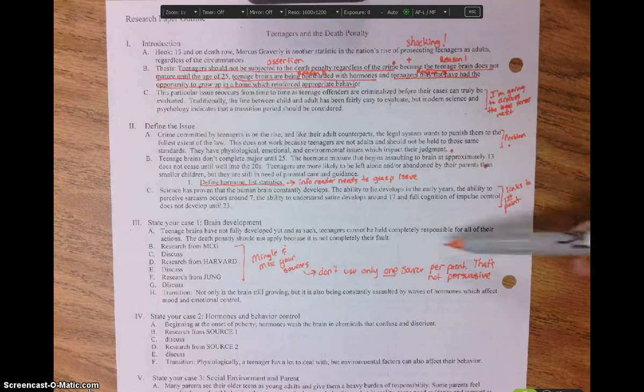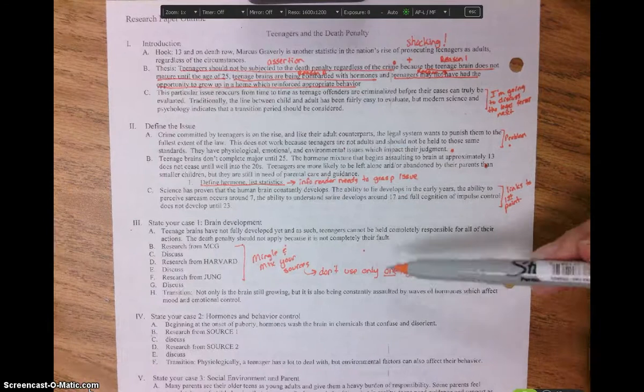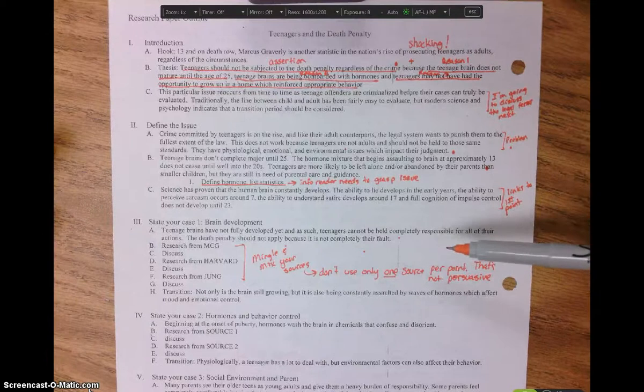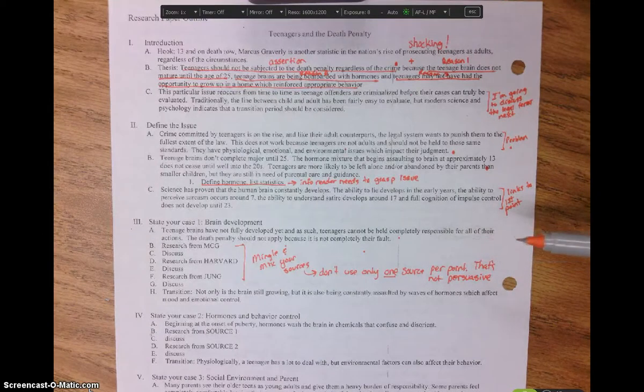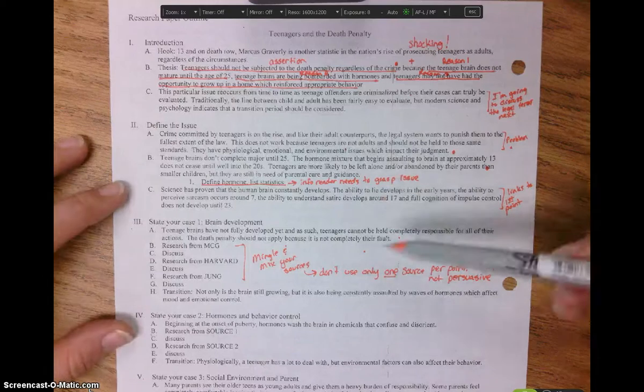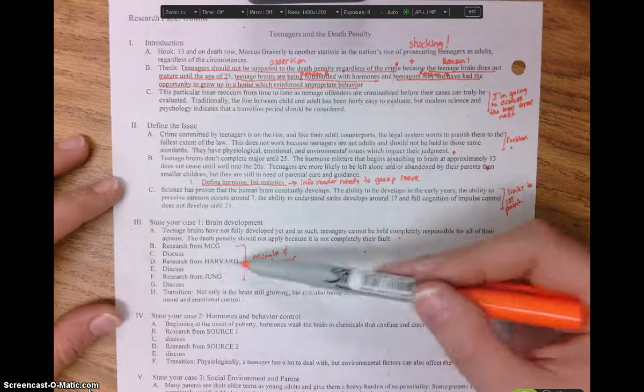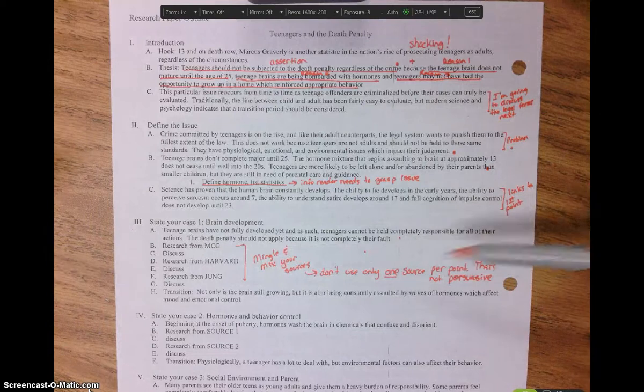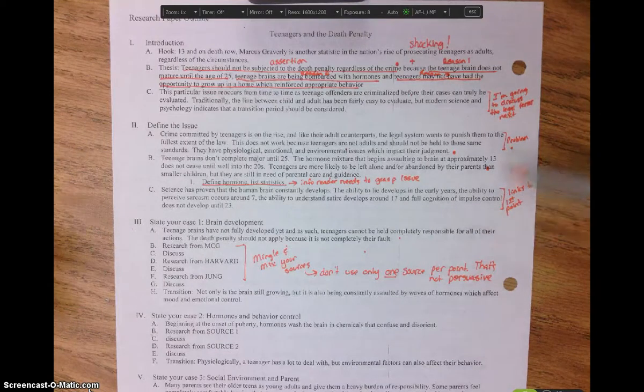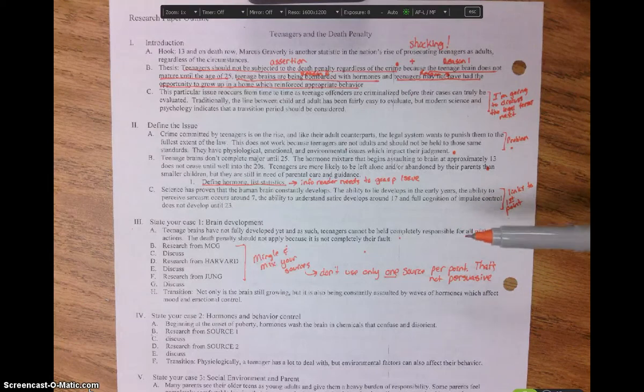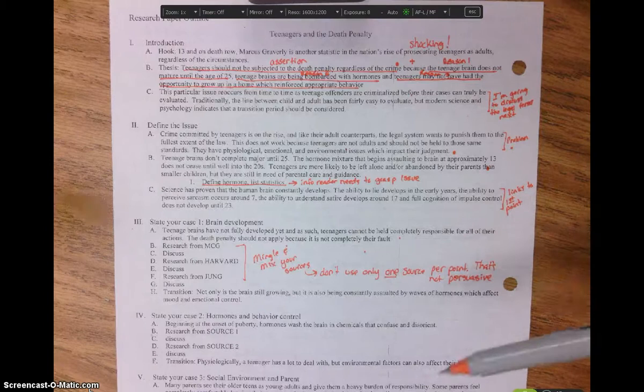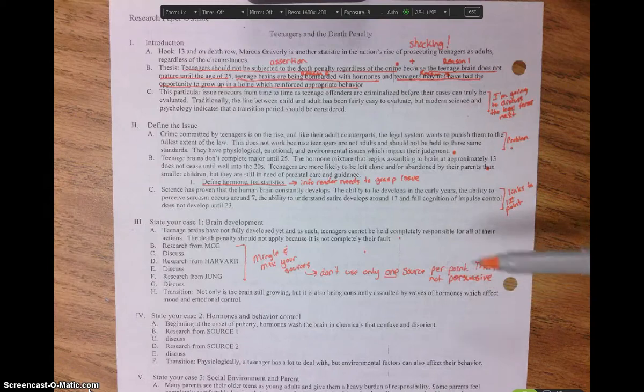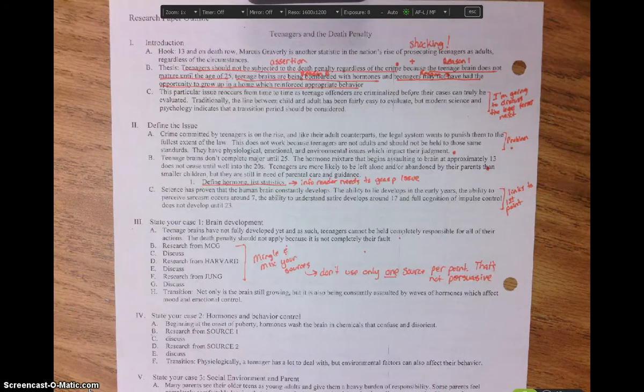And then this links to my first major point here. So I'm talking about science and brain development. My first point is about brain development. So I'm going to lead with this topic sentence, teenage brains have not fully developed yet and as such, teenagers cannot be held completely responsible for all of their actions. The death penalty should not apply because it is not completely their fault. And so that's my statement. And now I'm going to have research from MCG, I'm going to discuss it. Research from Harvard, discuss. Research from Young, discuss. And I'm going to mingle and mix my sources. If I only use one source, that's not a very good persuasive argument. But if I mingle them and I mix them up, then I can prove, hey, I'm not the only one that thinks this. It's me and MCG and Harvard and Young. So there's lots of things going on here that are proving my point. Not just one article. Because one article might be written by a weirdo. But not all three articles.